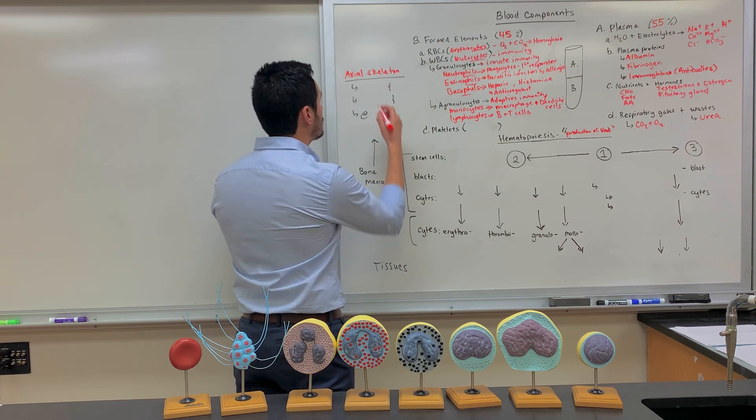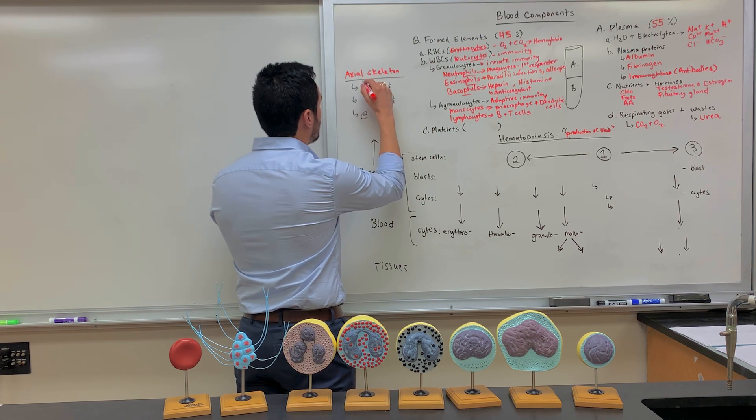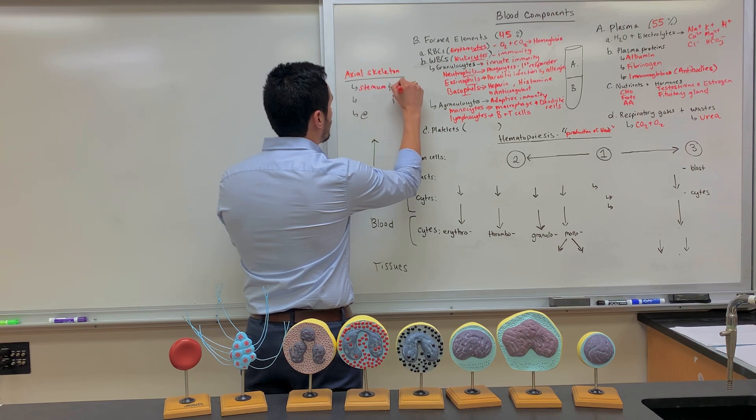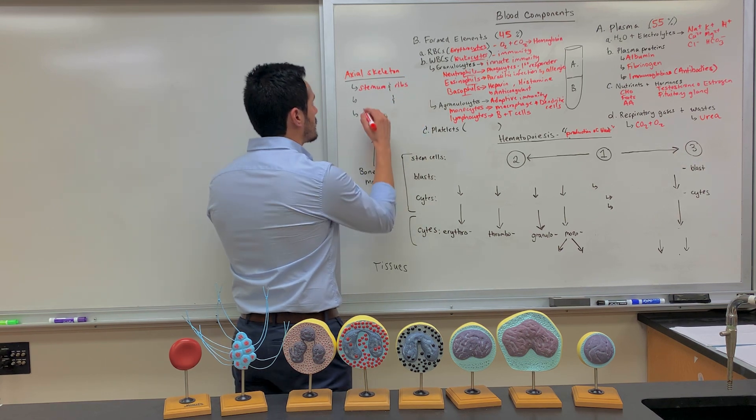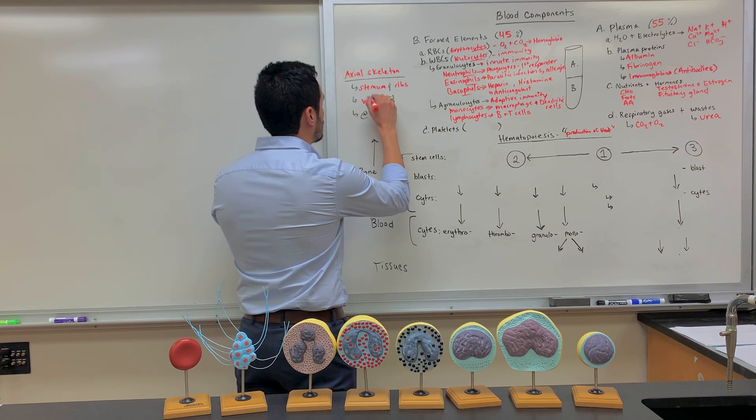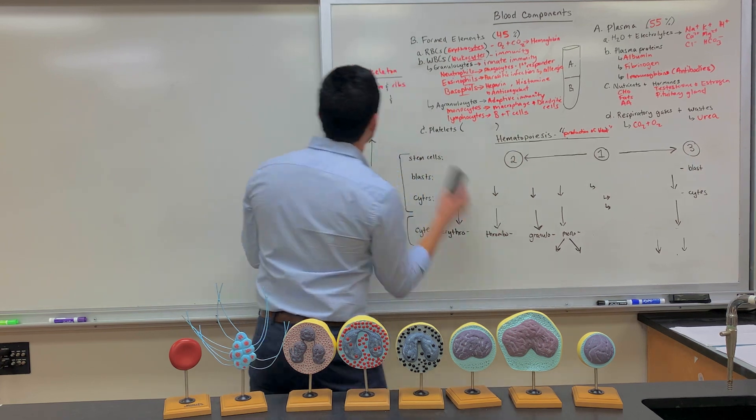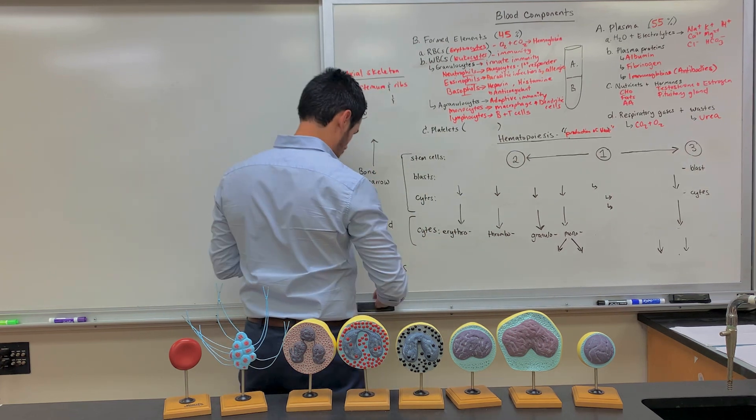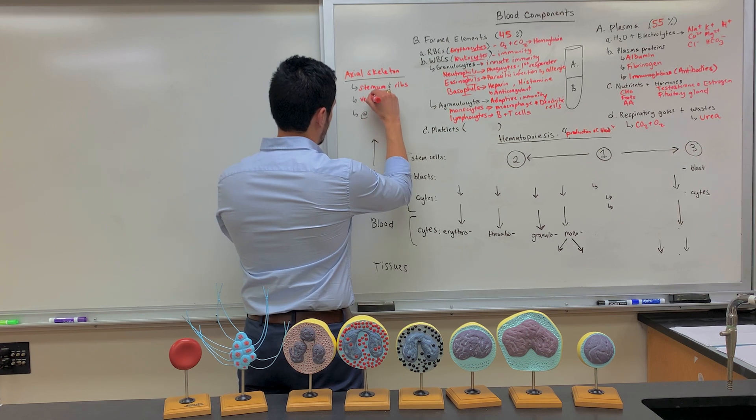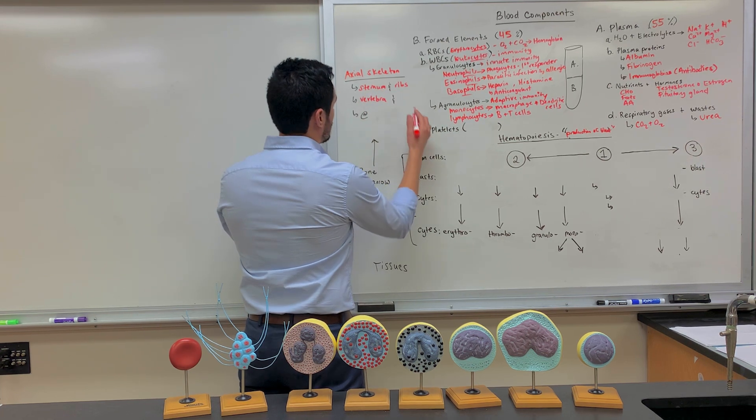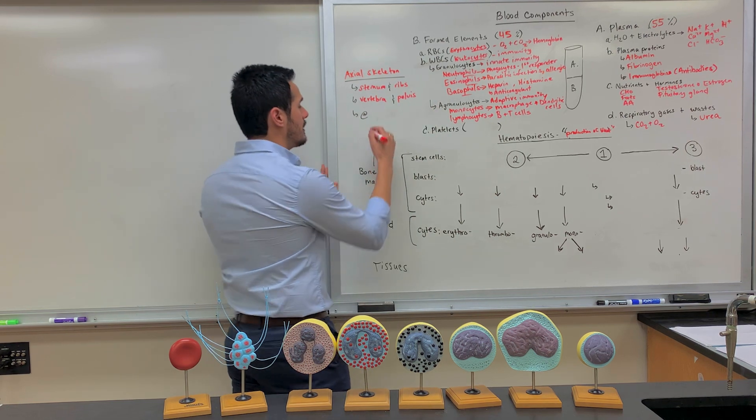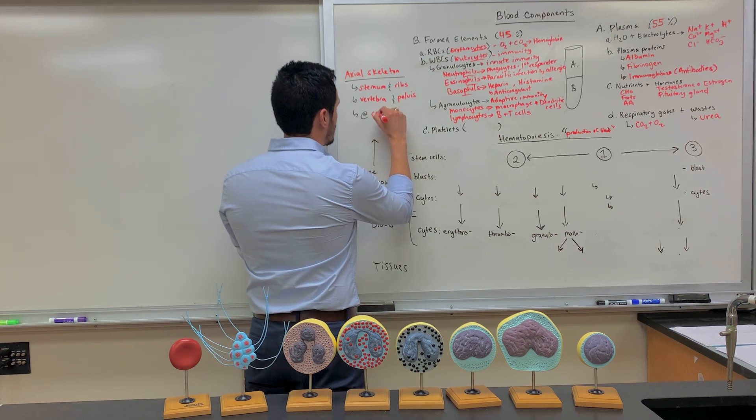Bone marrow is mainly found within the axial skeleton. So the particular bones it's found, first off, within the sternum and the ribs. It's also found within the vertebrae, as well as the pelvis. And the bone marrow is found at the center of these bones.